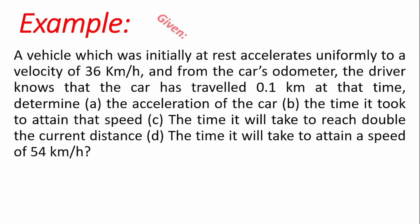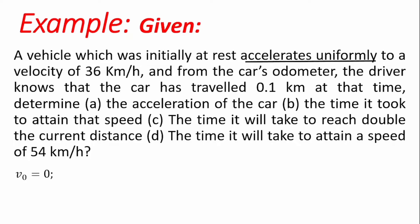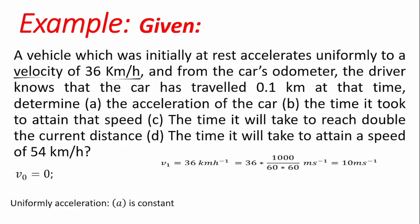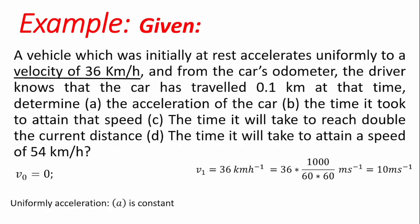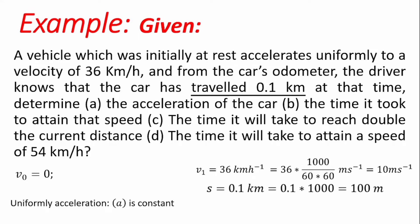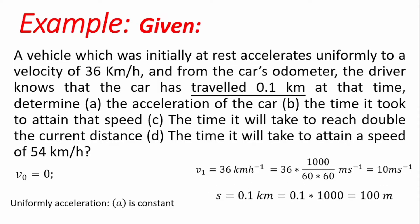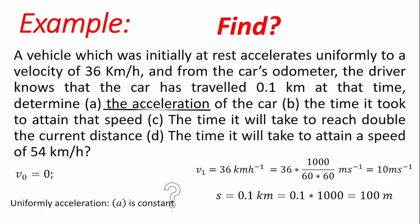As far as this problem is concerned, the vehicle was initially at rest, meaning the initial velocity is zero. The vehicle accelerates uniformly, which informs us that acceleration is constant, up to a velocity of 36 km per hour. So the final velocity, V1, becomes 36 km per hour, which is equivalent to 10 m per second. At that time, the car has traveled a distance of 0.1 km, which is equivalent to 100 meters. Firstly, we are to determine the constant acceleration of the car.